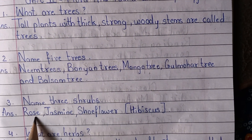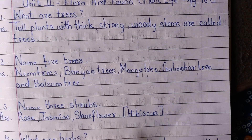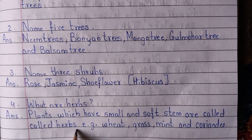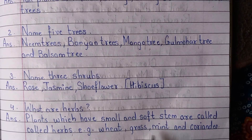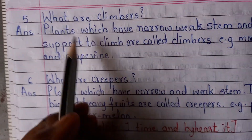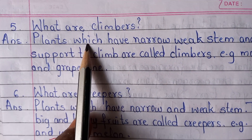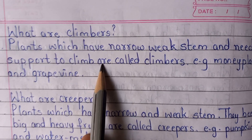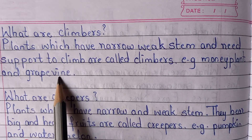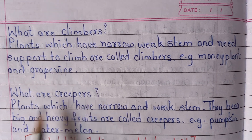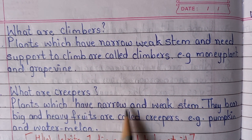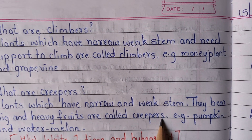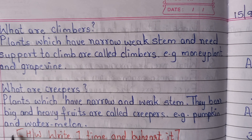Name 3 shrubs: rose, jasmine, shoe flower. What are herbs? Plants which have small and soft stems are called herbs — example: wheat, grass, mint, and coriander. What are climbers? Plants which have narrow stems and need support to climb are called climbers — example: money plant and grape vine. What are creepers? Plants which have narrow and weak stems and bear big and heavy fruits are called creepers — example: pumpkin and watermelon.